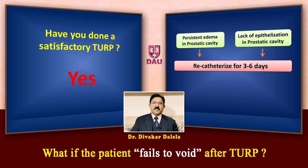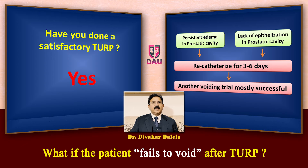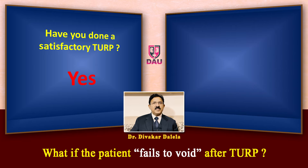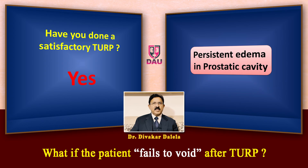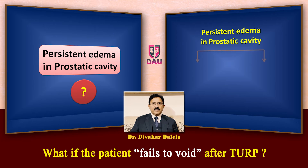These are often cited as reasons for a failed voiding trial. In this scenario we usually recatheterize the patient, and for a period of three to six days the patient remains on catheter. Once the catheter is removed, the second voiding trial is mostly successful. What has taken place in those three to six days that enables the patient to void? Let me elaborate on the persisting edema of the prostate cavity.